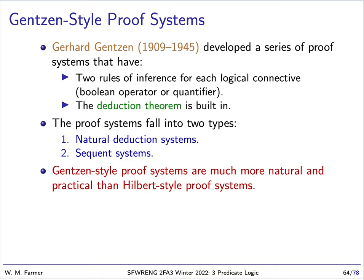Last time we were talking about Gentzen-style proof systems, and these proof systems fall into two types: natural deduction systems and sequent systems. And we gave last time a sequent system.